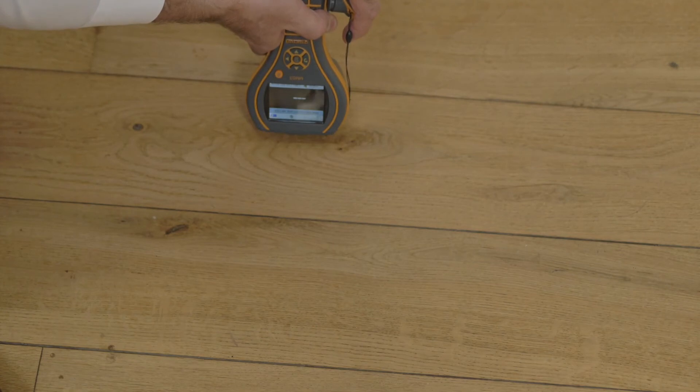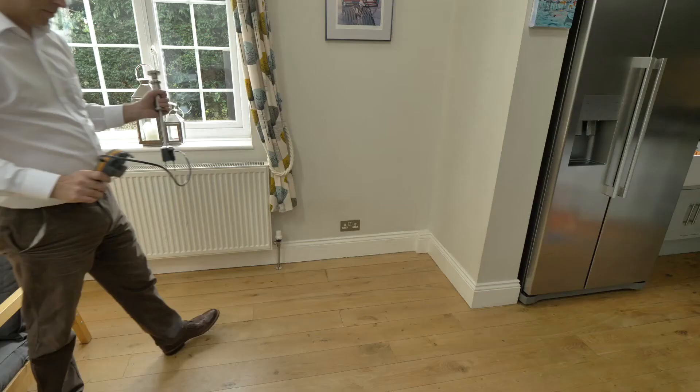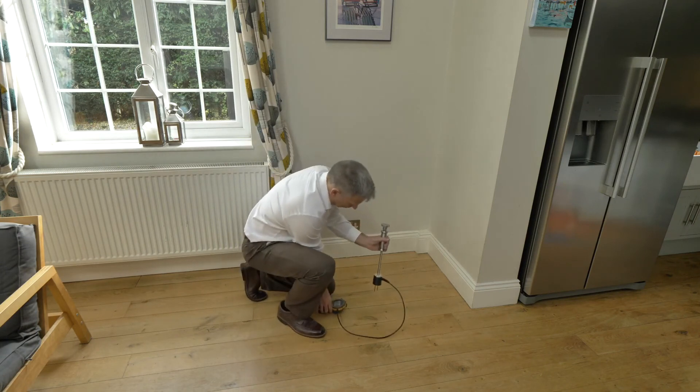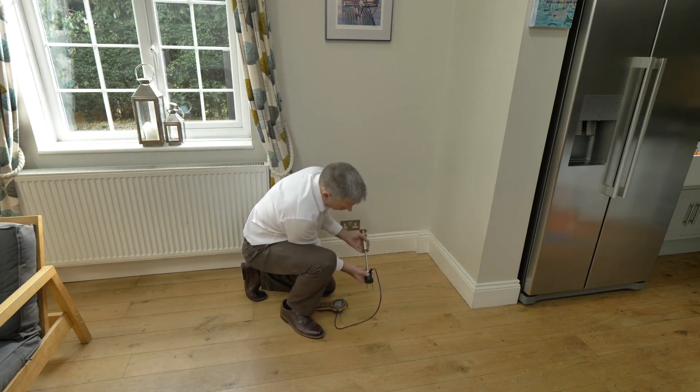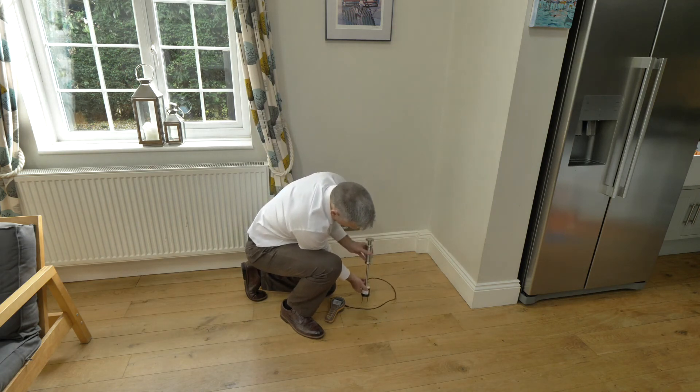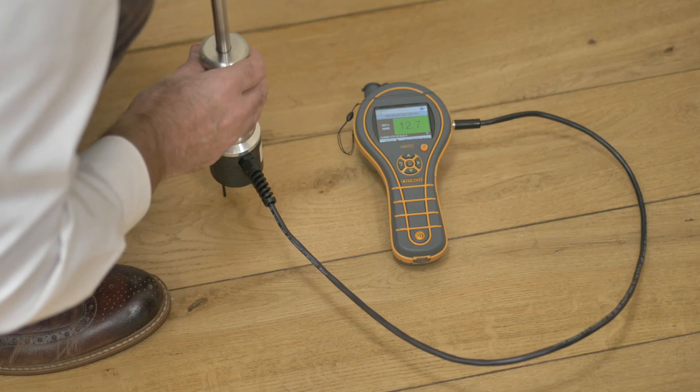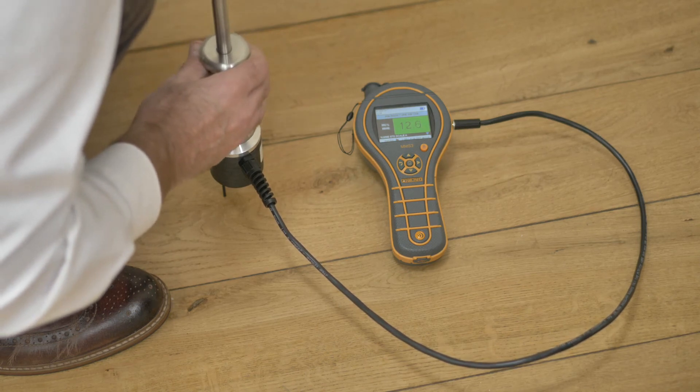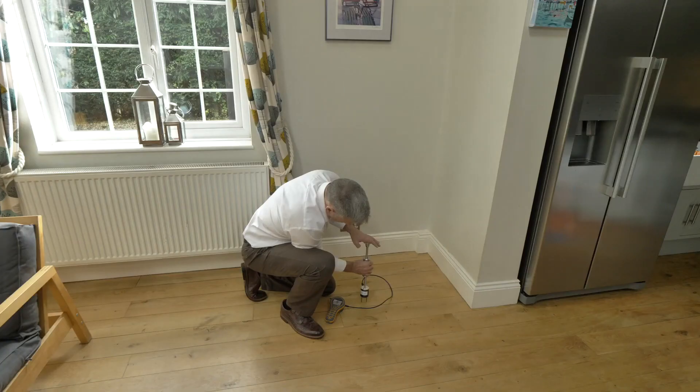However, there may be moisture deep within the wood structure, and for this we can use an accessory such as a hammer electrode. Plugging in the hammer electrode into the accessory port, we can then measure various different depths. The pins are insulated so we measure at the tip, and you would typically drive this into the material using the slide function of the hammer. This will help you determine if there's excessive moisture at different depths.